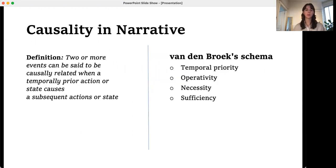Causality is first and foremost a way of understanding event relationships. Two or more events can be said to be causally related when a temporally prior action or state causes a subsequent action or state. For Van den Broek, one of the pioneers of causality research, causality consists of four interlocking criteria. Temporal priority: the causal event must be temporally prior to the caused event. Operativity: the causal event must be active when the caused event occurs. Necessity: the caused event would not have occurred without the causal event. And sufficiency: if given the circumstances of the story, the causal event occurs, then the caused event also occurs.